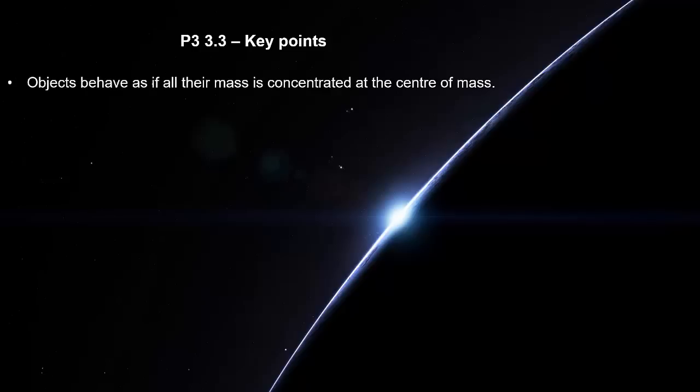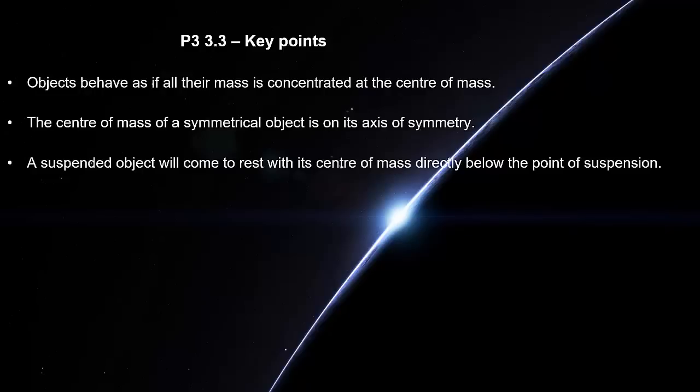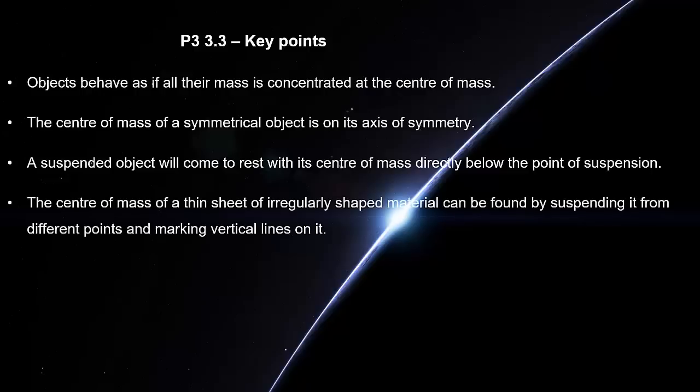Objects behave as if all their mass is concentrated at the center of mass. The center of mass of a symmetrical object is on its axis of symmetry. A suspended object will come to rest with its center of mass directly below the point of suspension. The center of mass of a thin sheet of irregularly shaped material can be found by suspending it from different points and marking vertical lines on it.